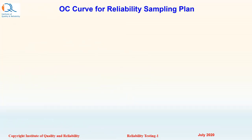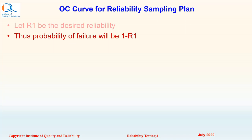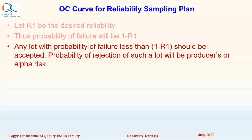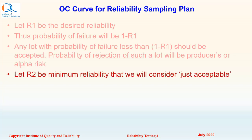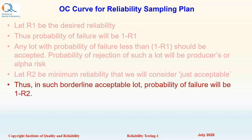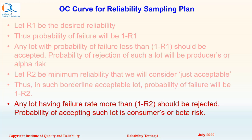Let us now understand the OC curve for a reliability sampling plan. Let R1 be the desired reliability; thus the probability of failure will be 1 minus R1. Any lot with probability of failure less than 1 minus R1 should be accepted, and the probability of rejection of such a lot will be the producer's risk or alpha risk. Let R2 be the minimum reliability we will consider just acceptable; in such a borderline acceptable lot, probability of failure will be 1 minus R2. Any lot having failure rate more than 1 minus R2 should be rejected, and the probability of accepting such a lot should be low — we call this the consumer's or beta risk.